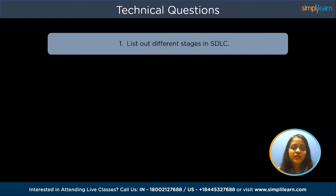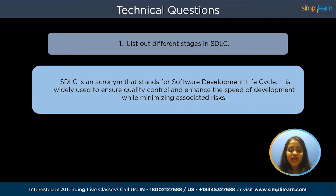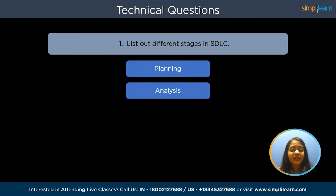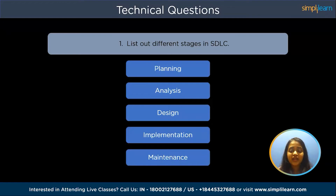Coming to technical questions: list out the different stages in SDLC. SDLC is an acronym that stands for Software Development Life Cycle, sometimes also called System Development Life Cycle or Application Development Life Cycle. It is used to describe the process of planning, creating, testing, and deployment of an information system. Business analysts play an important role in requirement analysis — they gather data from customers and send it to the product development team. SDLC has five important phases: planning, requirement analysis, design implementation, and maintenance of the product.